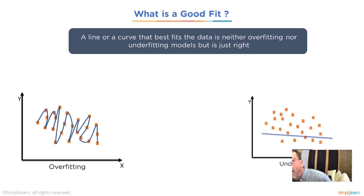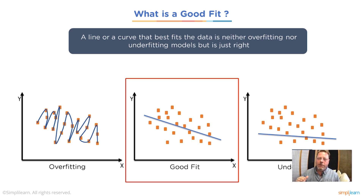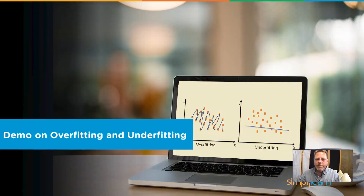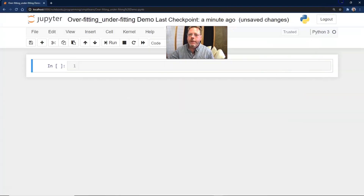So what is a good fit? A linear curve that best fits the data is neither overfitting nor underfitting — it's just right. We have nice examples here where overfitting has lines going up and down trying to include every point, underfitting has the line really off from where the data is, and a good fit minimizes that error. This is all exciting, but what does this actually look like? We need to jump in, put code together, and see what it looks like when we're programming.